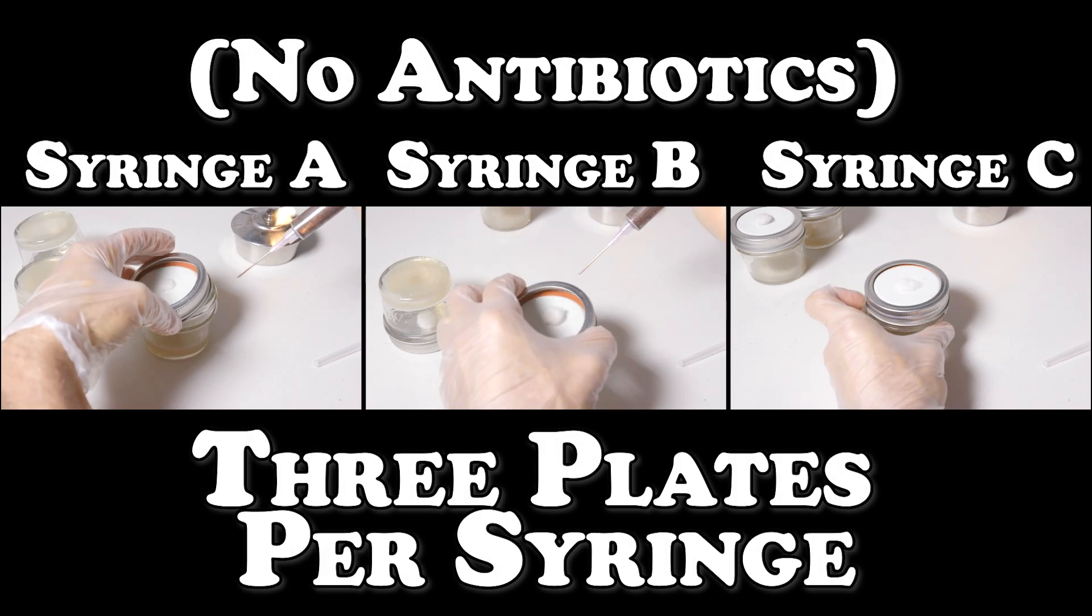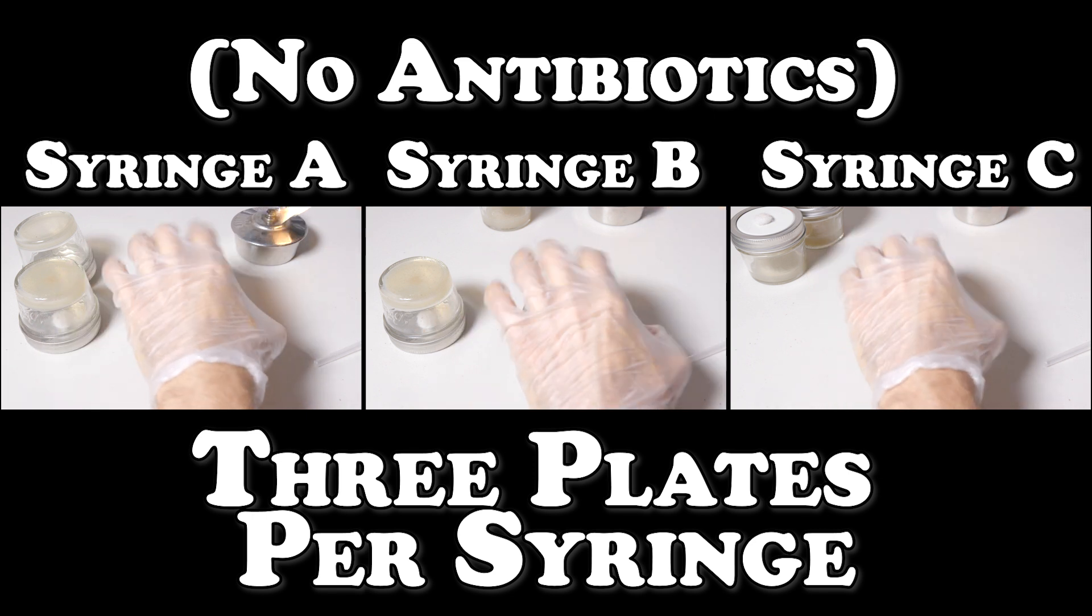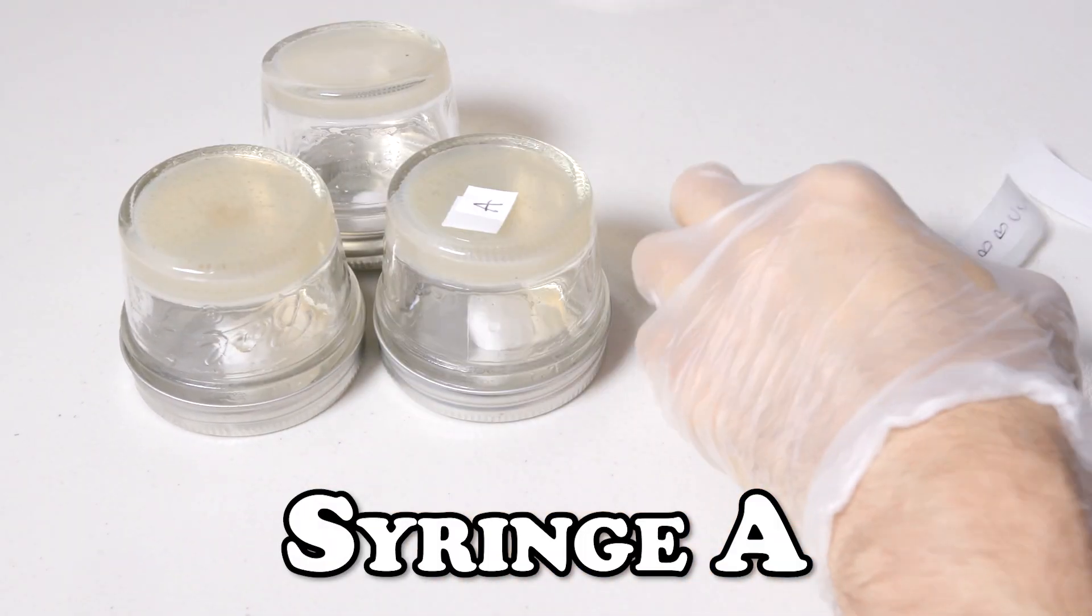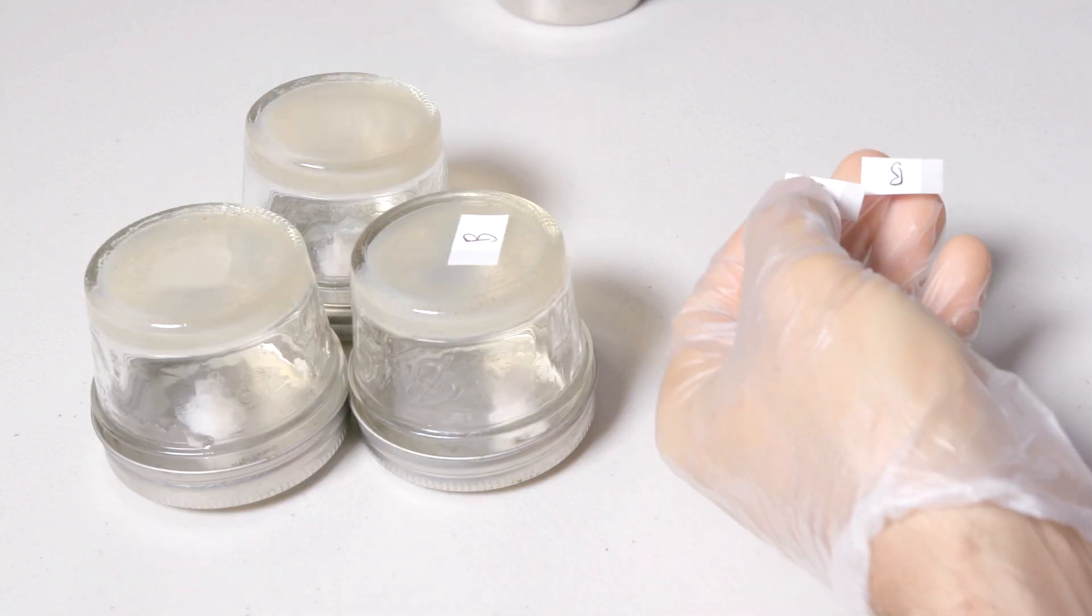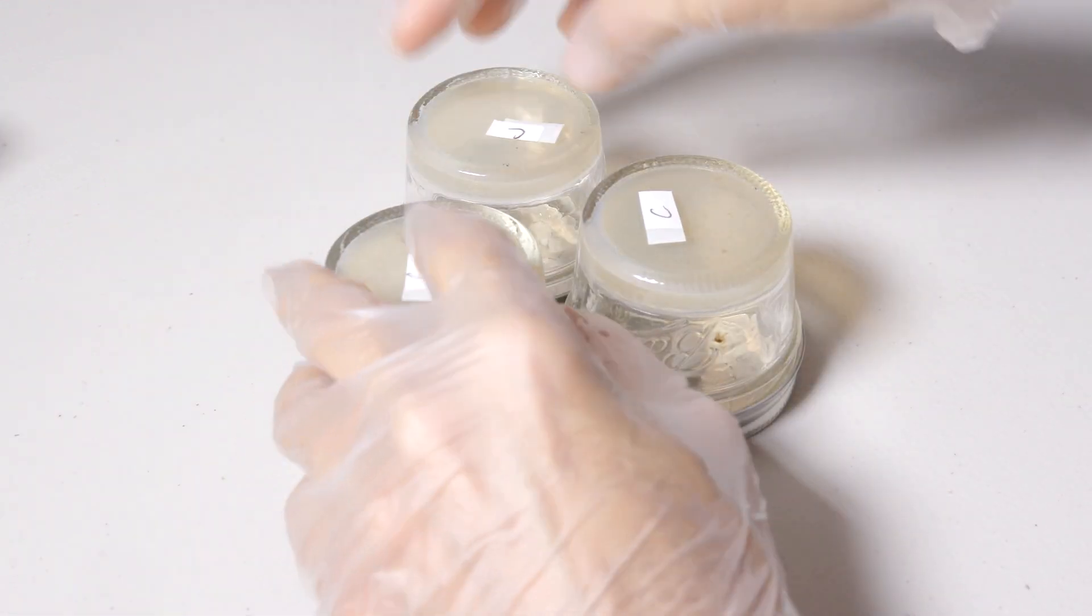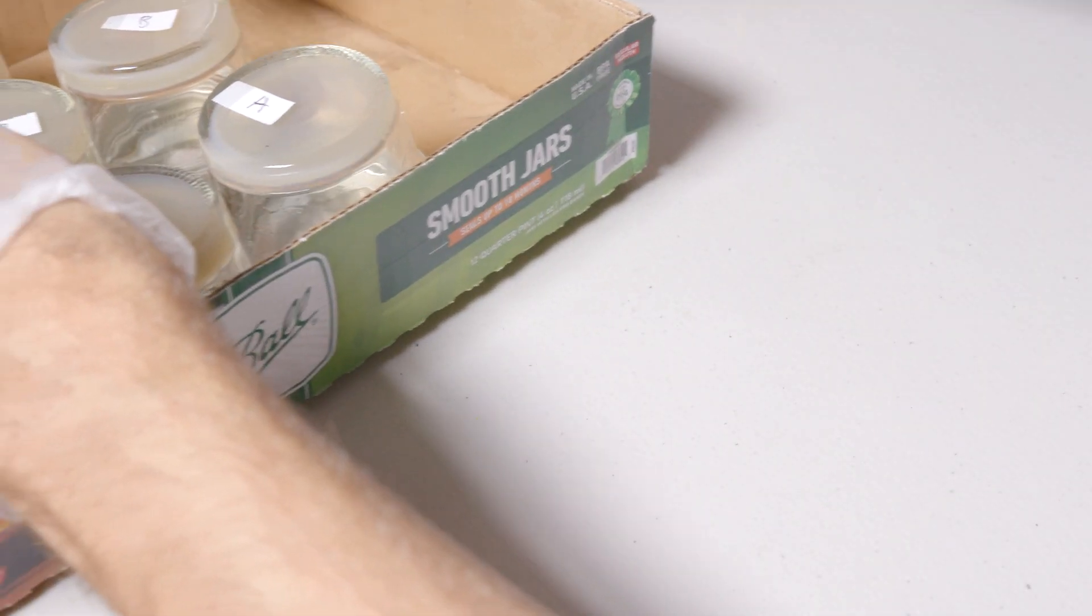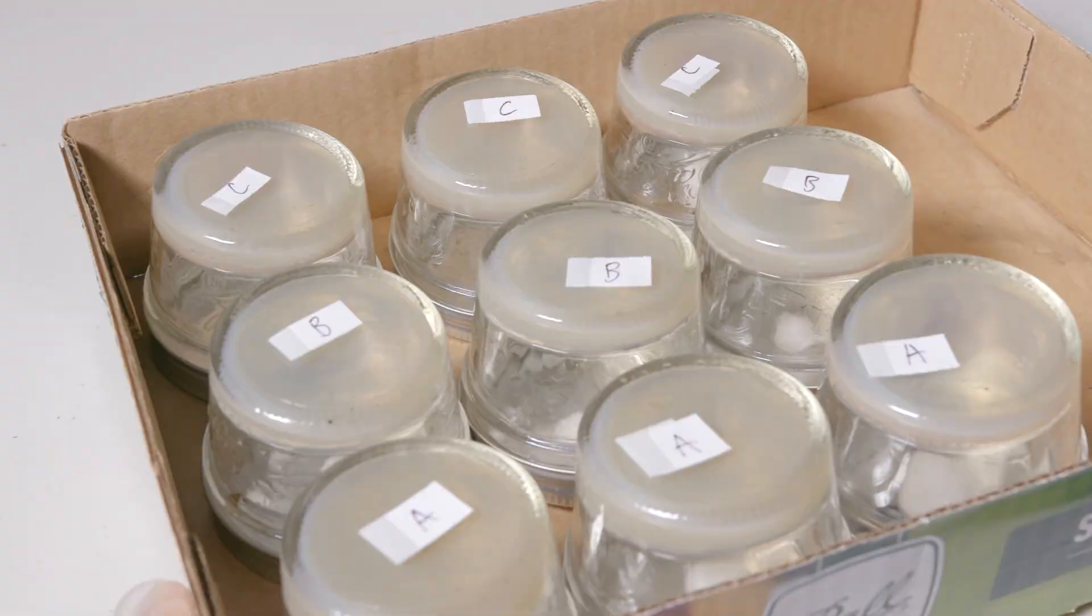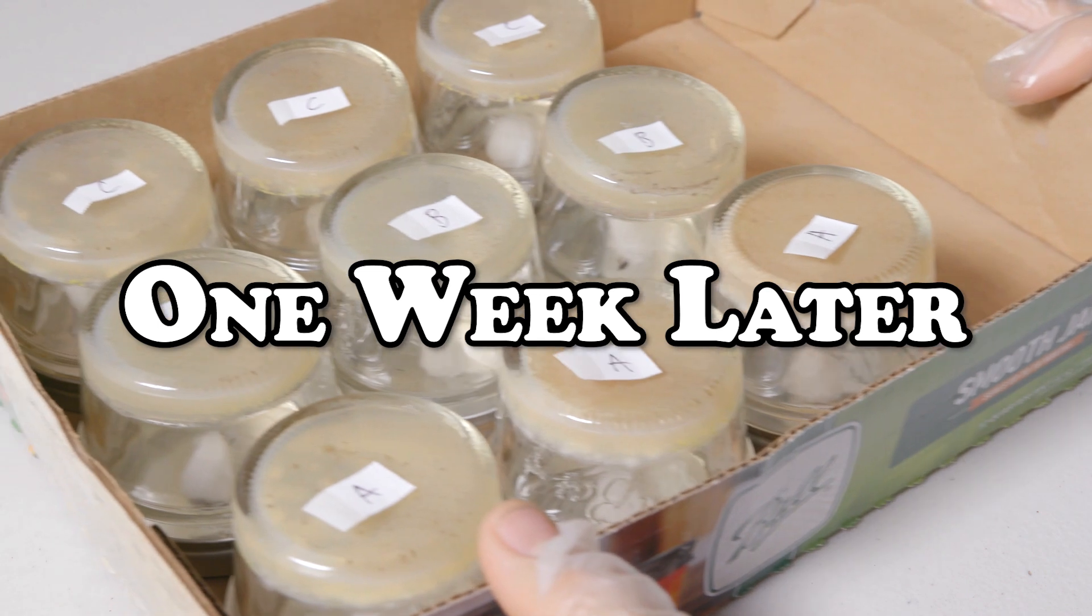Syringe A, B, and C will each inoculate three plates per syringe. Here we are adding the spores onto our regular plates - no antibiotics - and we're going to set them aside for one week and have a look at them. For the first inoculation I like to simply add the syringe strain I'm working with to each plate, so here we just have A, B, and C. Once I get to the first round of isolation I'll then start adding numbers to each plate to keep track of the subsequent rounds of isolation. Here we are ready with our plates one week later.